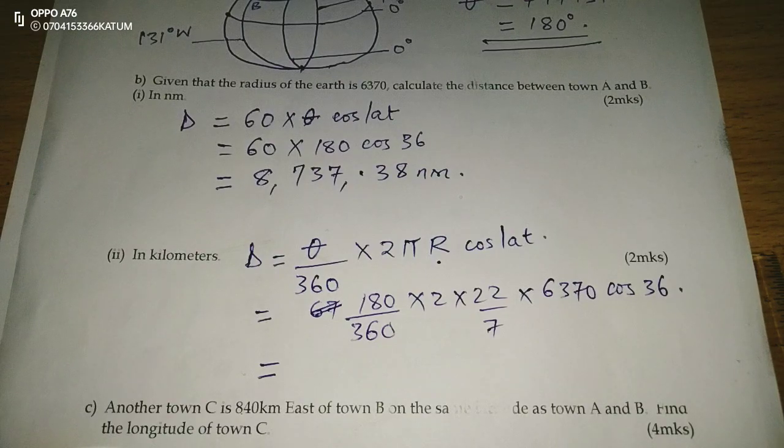180 multiplied by 2, by 22, multiplied by 6370, the cosine of 36, then I divide by 360 multiplied by 7.